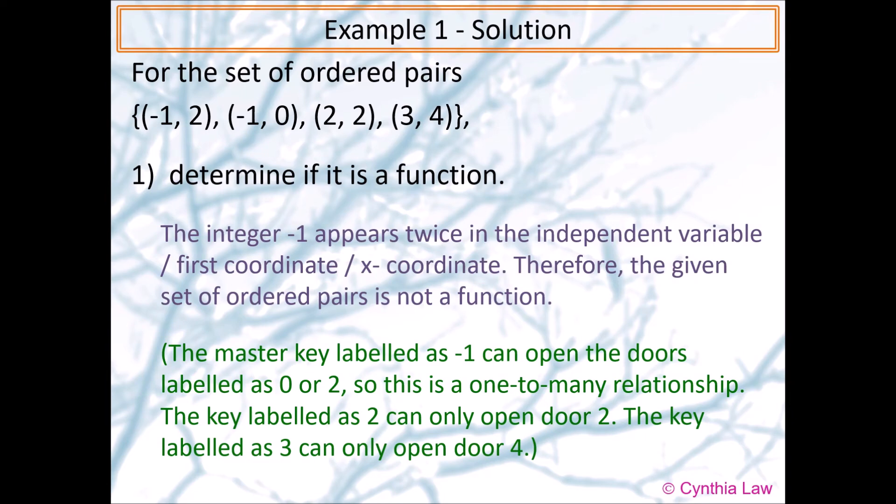So because we have one master key in the three keys in total, we say that the set is not a function. It doesn't matter if other points show a one-to-one relationship. If you have one-to-many relationship for even just one x-coordinate, then the whole set is not a function.